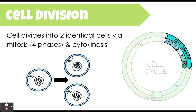Cell division — actually dividing your cell into two identical cells — requires two processes. The first is mitosis, which happens in four phases, followed by the actual step of dividing the cell in cytokinesis. In another lesson, we will go through what is happening during mitosis as well as cytokinesis to actually divide one cell into two identical cells.